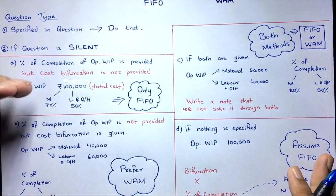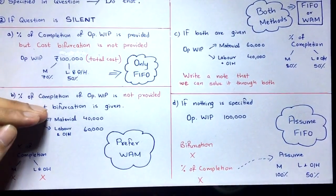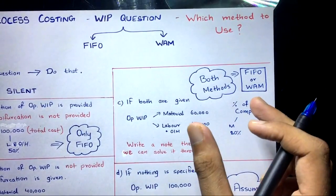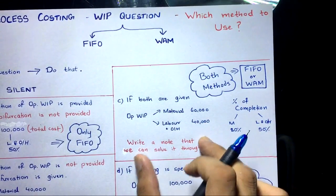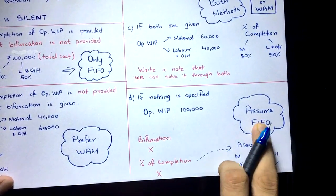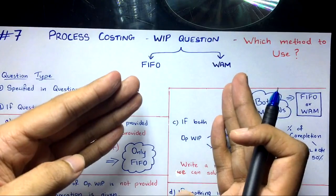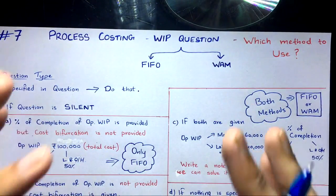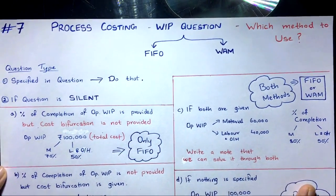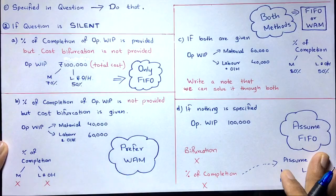To summarize all four cases for silent questions: if bifurcation is not provided but percentage of completion is given, use FIFO; if percentage of completion is not given but bifurcation is provided, use WAM; if both are given, either FIFO or WAM can be applied and you write a note; if nothing is specified, assume the percentages of completion and apply FIFO. You will never be confused about which method to use again — take a screenshot of this for reference.